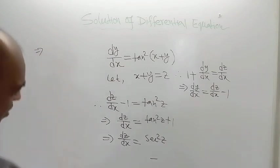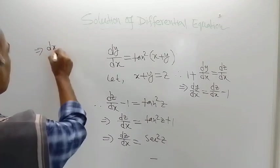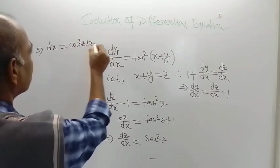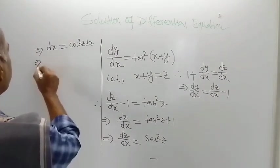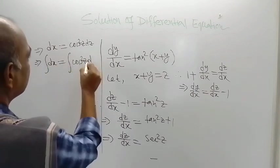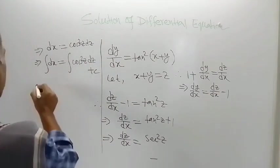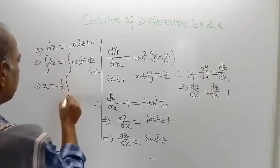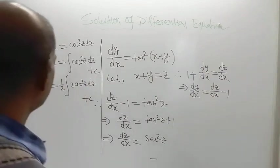So the next line is: dz divided by sec square z equals dx, which means dx equals cos square z dz. Now integrate both sides. We get the integral of cos square z dz plus a constant of integration c. We can write the right-hand side as one half times the integral of 2 cos square z dz plus c.